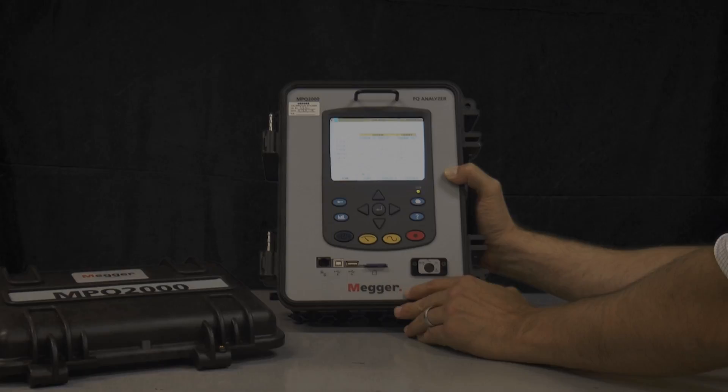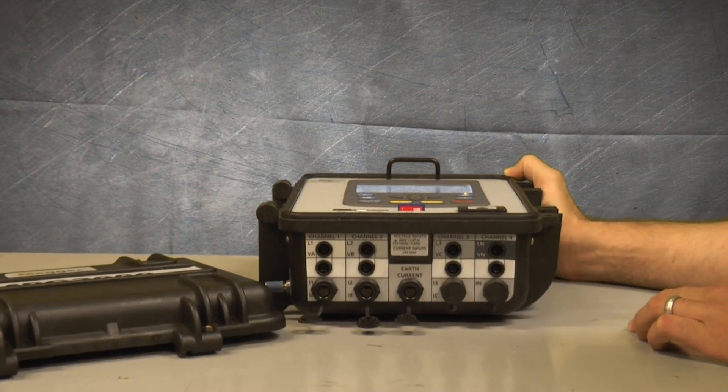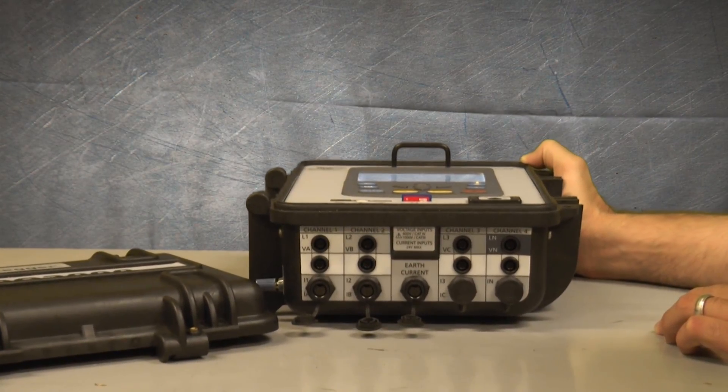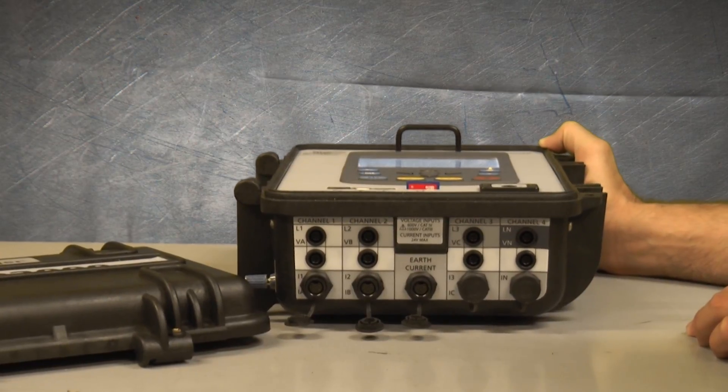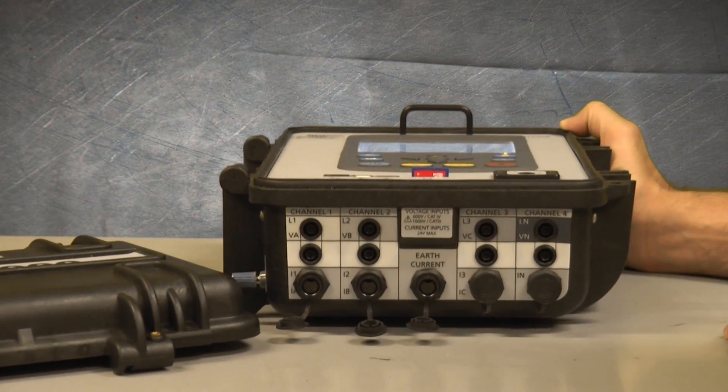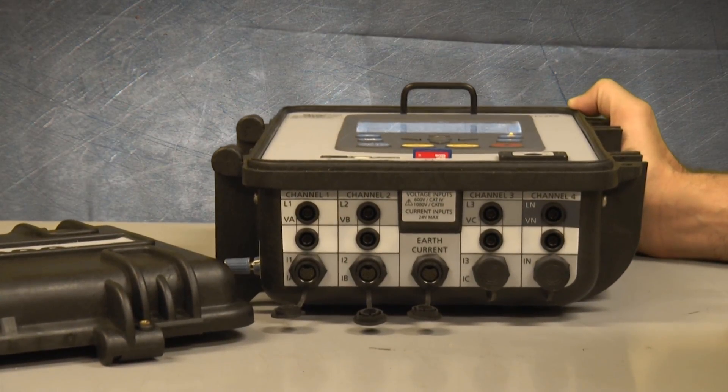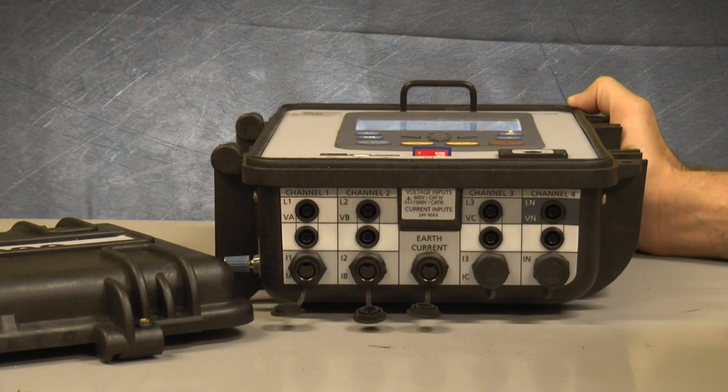The MPQ-2000 is a CAT-4 rated device at 600 volts. It can record both AC and DC simultaneously, up to 1000 volts.